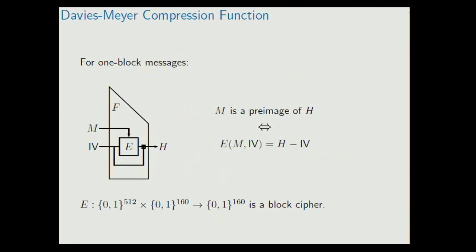If we consider one block message, and this is what we do in this talk, then saying that M is a pre-image of H is the same as saying that the initial value, which is specified by SHA-1, is encrypted to the hash value minus the IV, so by this block cipher here. So what we have is kind of a key recovery problem.